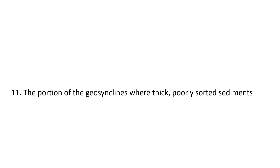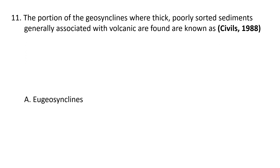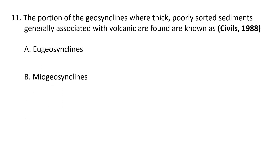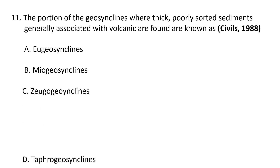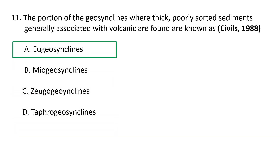Next question: The portion of the geosyncline where thick poorly sorted sediments are generally associated with volcanics are found are known as — A) eugeosynclines, B) miogeosynclines, C) jugogeosynclines, and D) taphrogeosynclines. Miogeosynclines are geosynclines with the absence of volcanics. Jugogeosynclines are linear areas of subsidence in cratonic areas. Taphrogeosynclines are riftogenic basins bounded by faults on both sides. The correct answer is A, eugeosynclines.